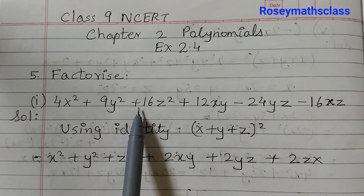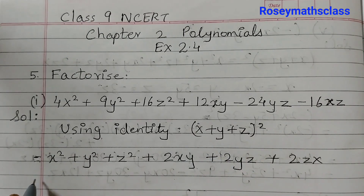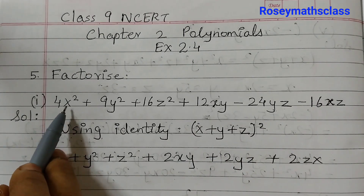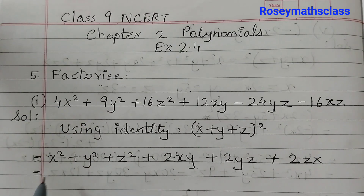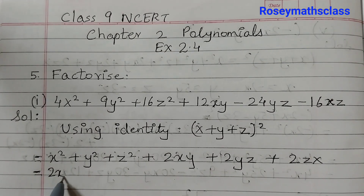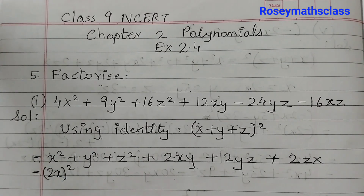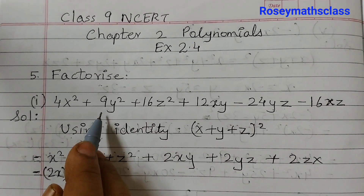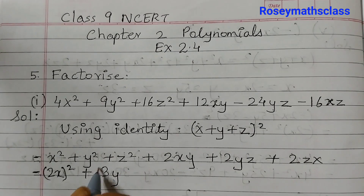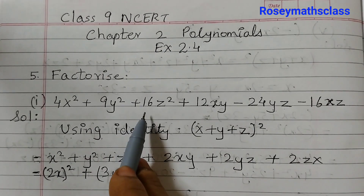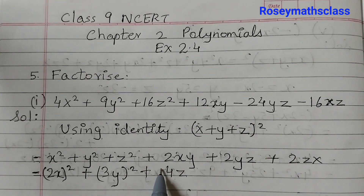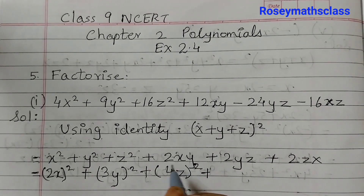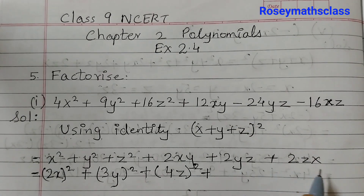We need to write this in that form. In this case, the x term is from 4x²: since 2×2 = 4, we can write it as (2x)². For 9y², since 3×3 = 9, we write (3y)². For 16z², since 4×4 = 16, we write (4z)².